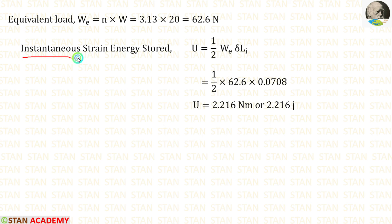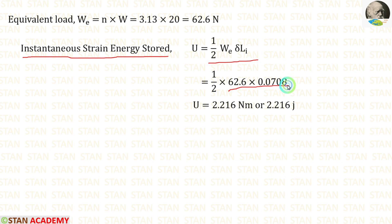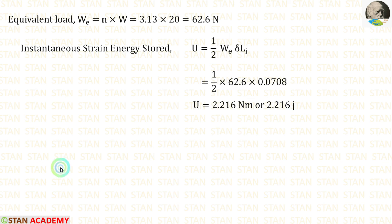Now let us calculate the instantaneous strain energy stored. The formula is half into WE into delta Li. We have already calculated these values and applying them, we get U equal to 2.216 Newton meter, or 2.216 joules. Now we are going to end this session. Thank you for watching this video.